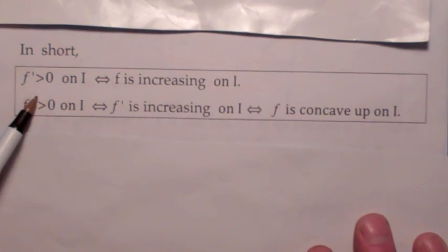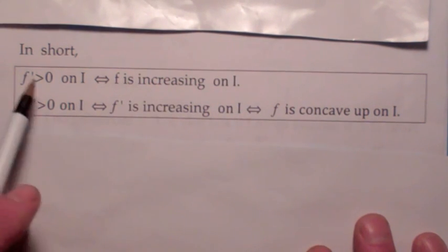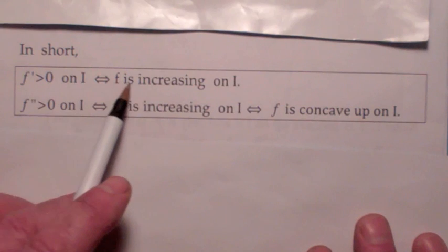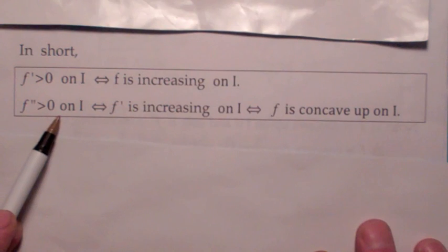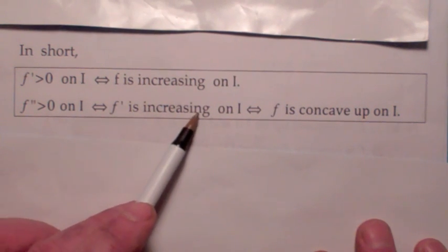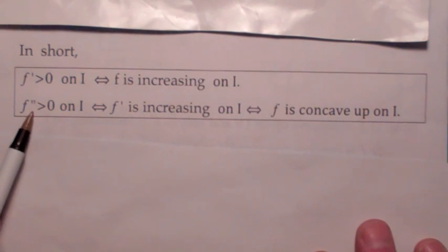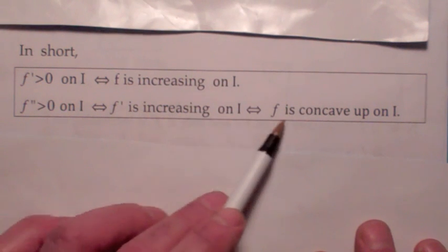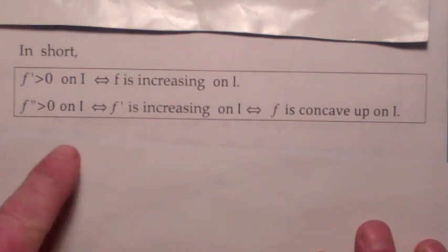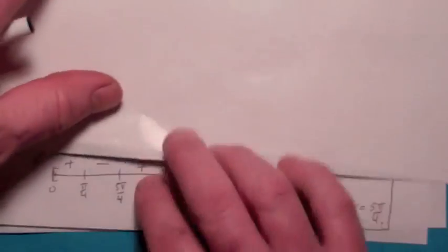Everything you need to know in this section can be summarized here. For the first derivative test: F prime > 0 precisely when F is increasing; F prime < 0 precisely when F is decreasing. And what we just covered: F double prime > 0 precisely when F prime is increasing, precisely when F is concave up. Likewise, F double prime < 0 precisely when F prime is decreasing, precisely when F is concave down.